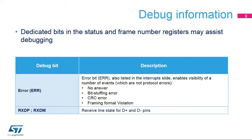Some debug help is available using a single status bit, which corresponds to an interrupt event. Within the USB device controller, the dedicated ERR status bit provides some debug functionality in a USB application in relation to various events. The events that can trigger this debug bit are listed in this table. There is also a way to directly read the states of the D-plus and D-minus lines.